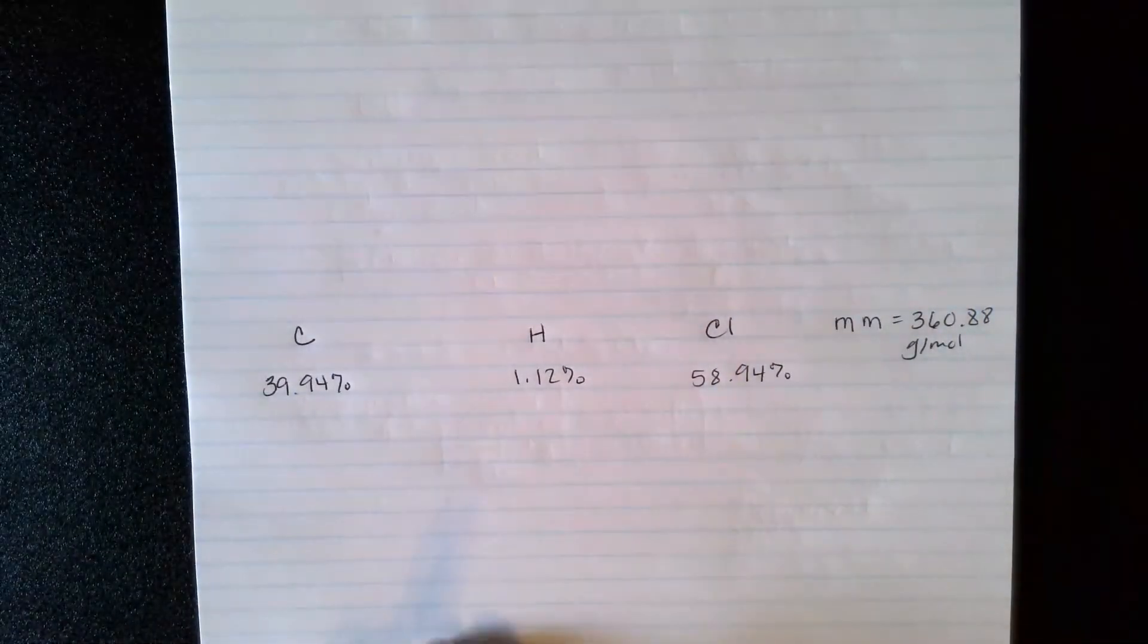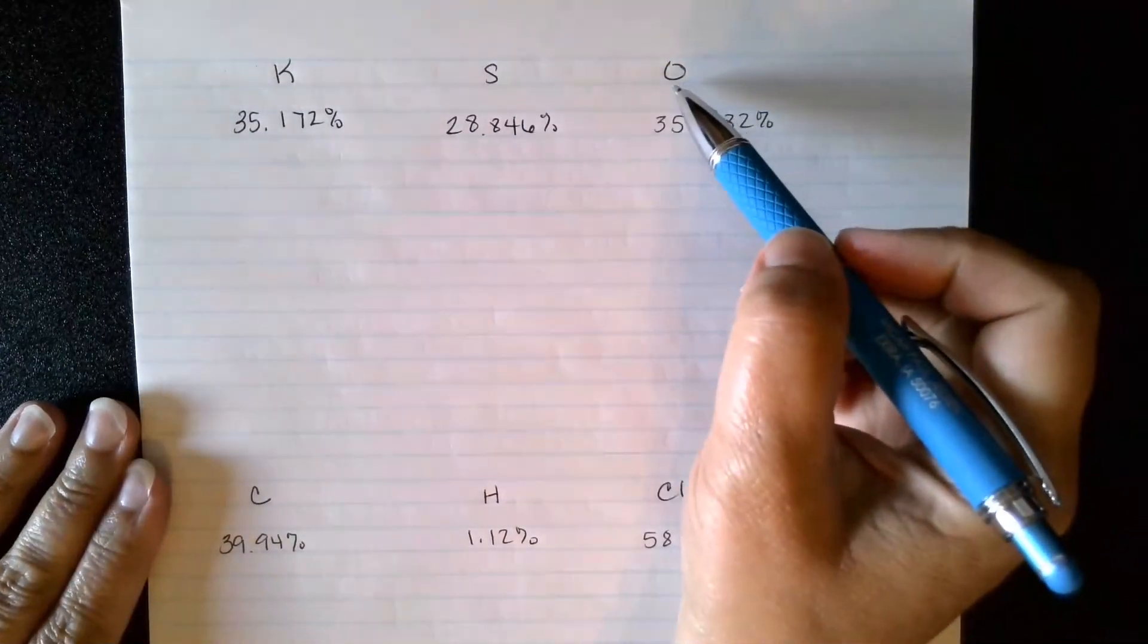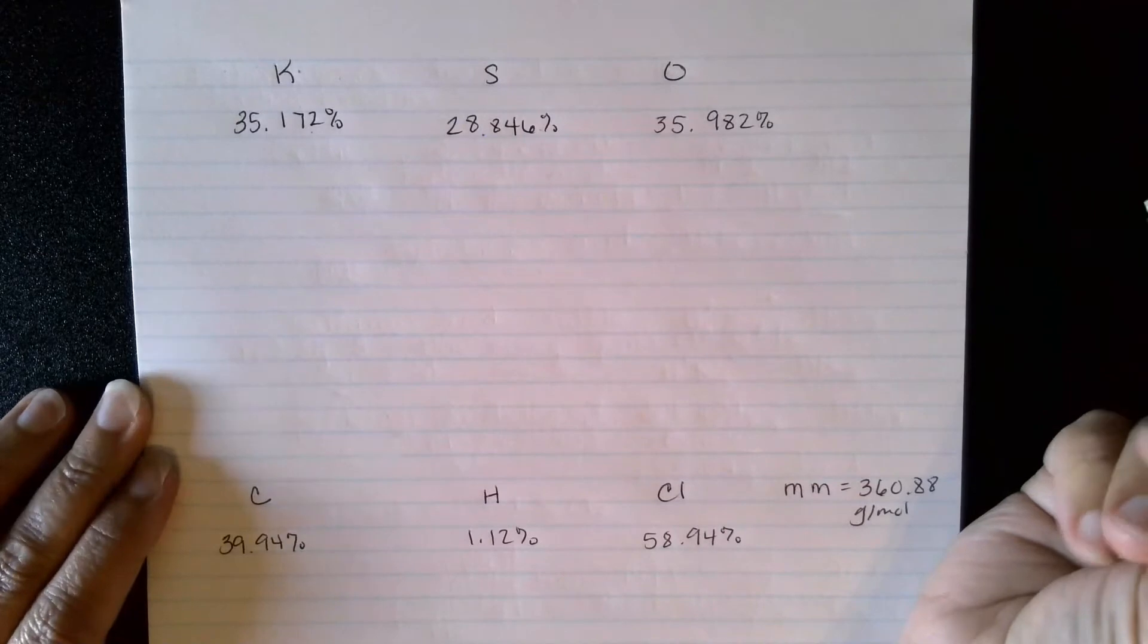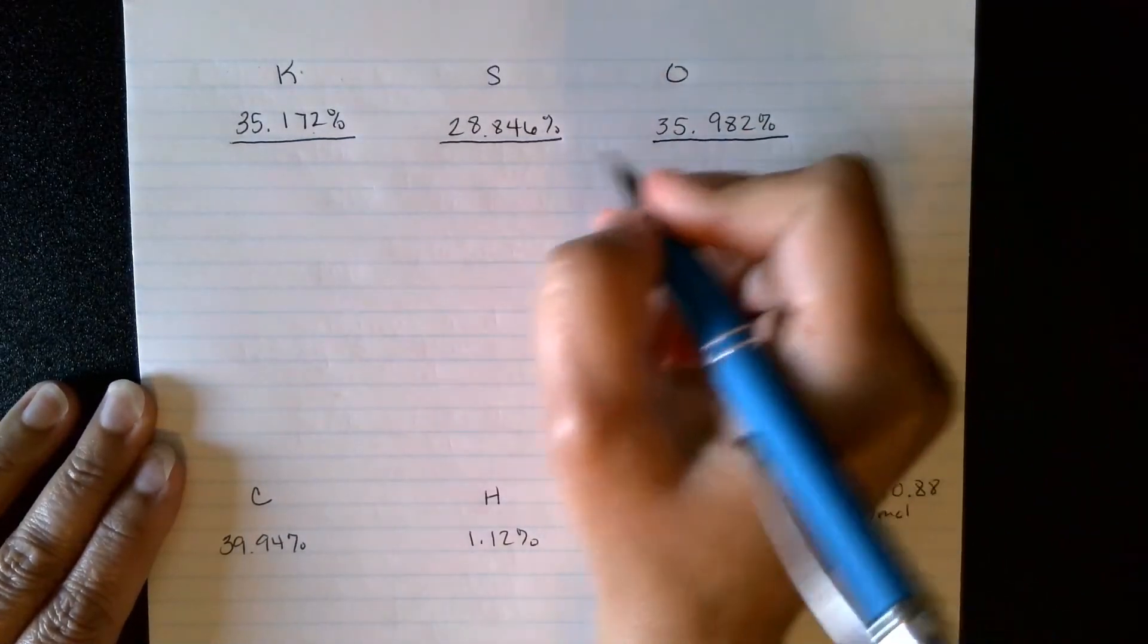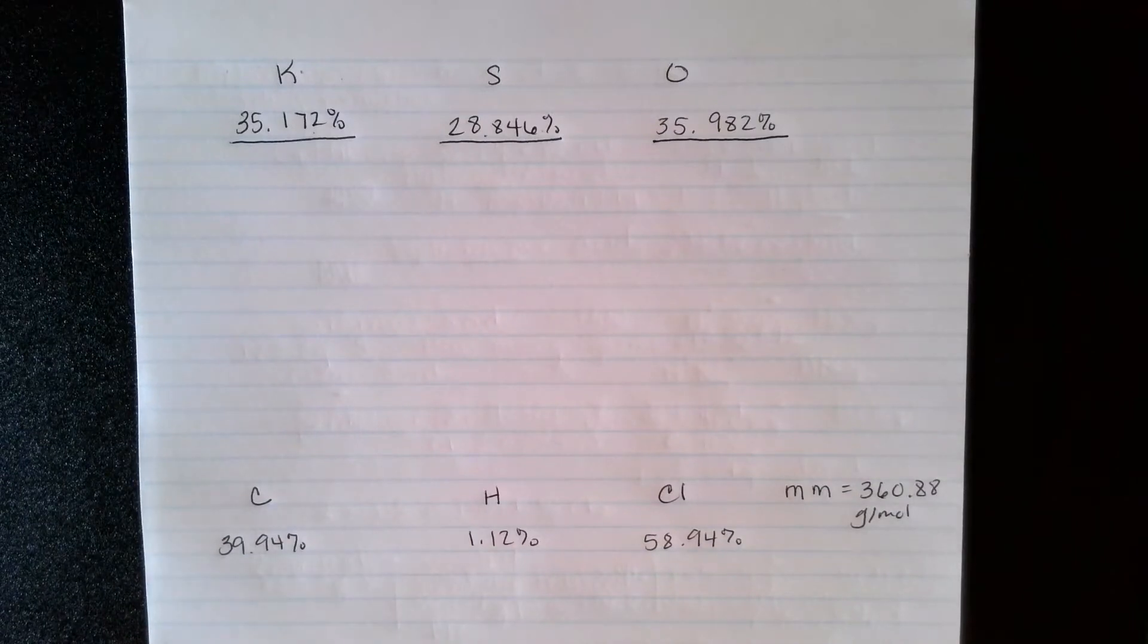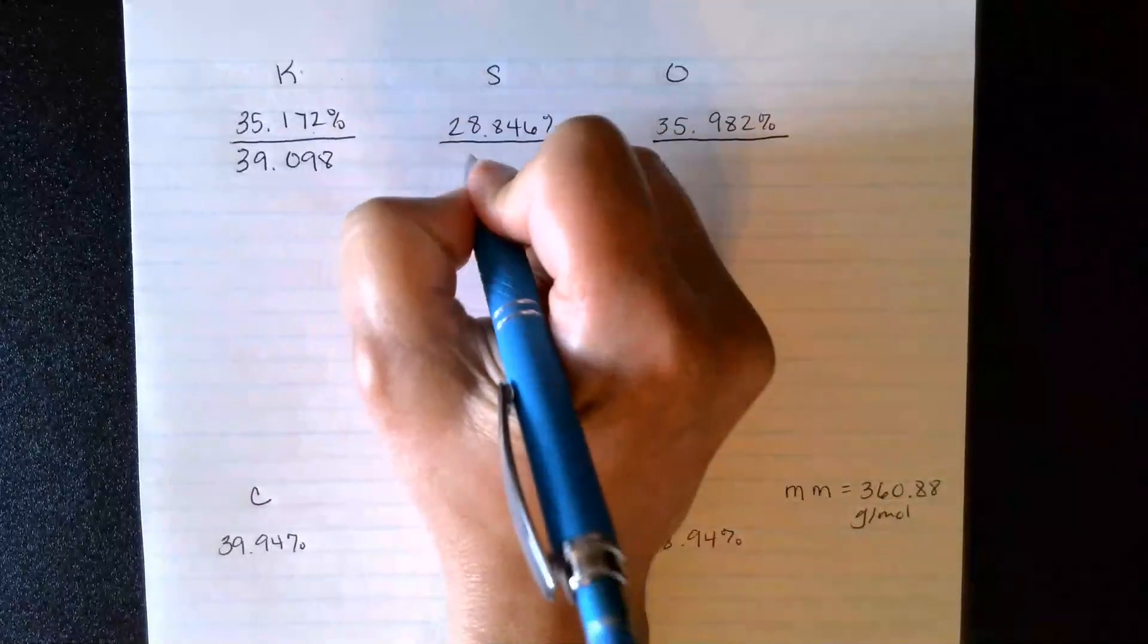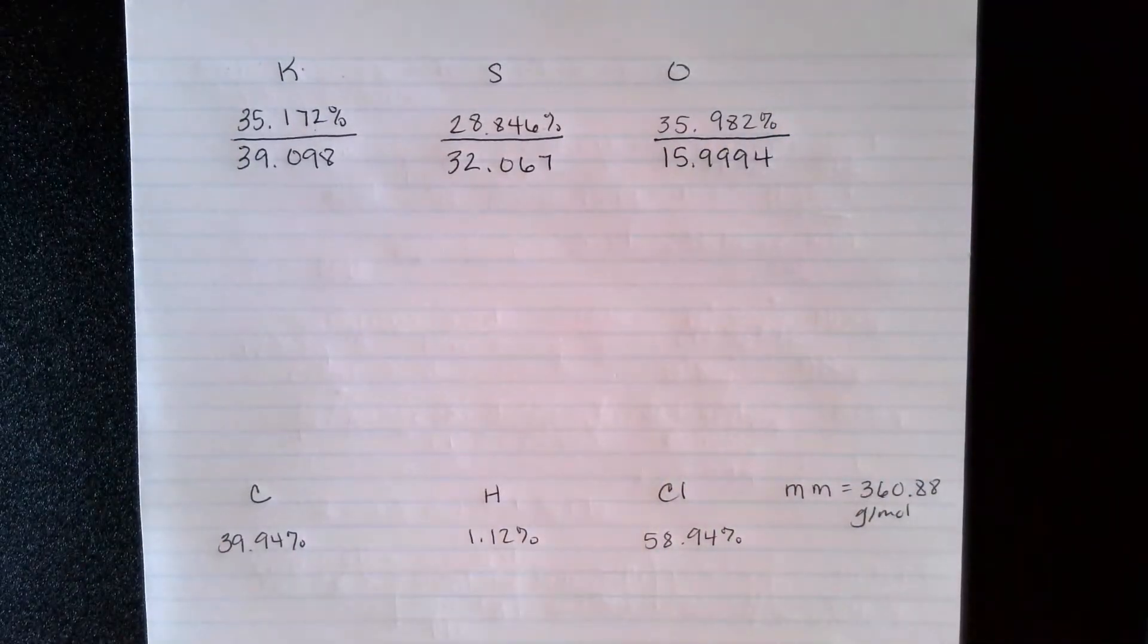Okay, so now we're going to learn how to calculate this. All right, so in our first example, they've given me percentages. So they're either going to give you percentages, or you will need to take the grams that they give you and find the percent. Okay, but in this case, they've given me percentages, and I've put them in the columns. So it told me I have 35.172% of potassium. It gives me the percent of sulfur and oxygen. So I just put them underneath their particular element. And my first step that I'm going to do is divide each one of these by their atomic mass. So I'm going to look at my periodic table. And potassium is 39.098. And sulfur is 32.067. Oxygen is 15.9994. I'm going to go ahead and divide those.